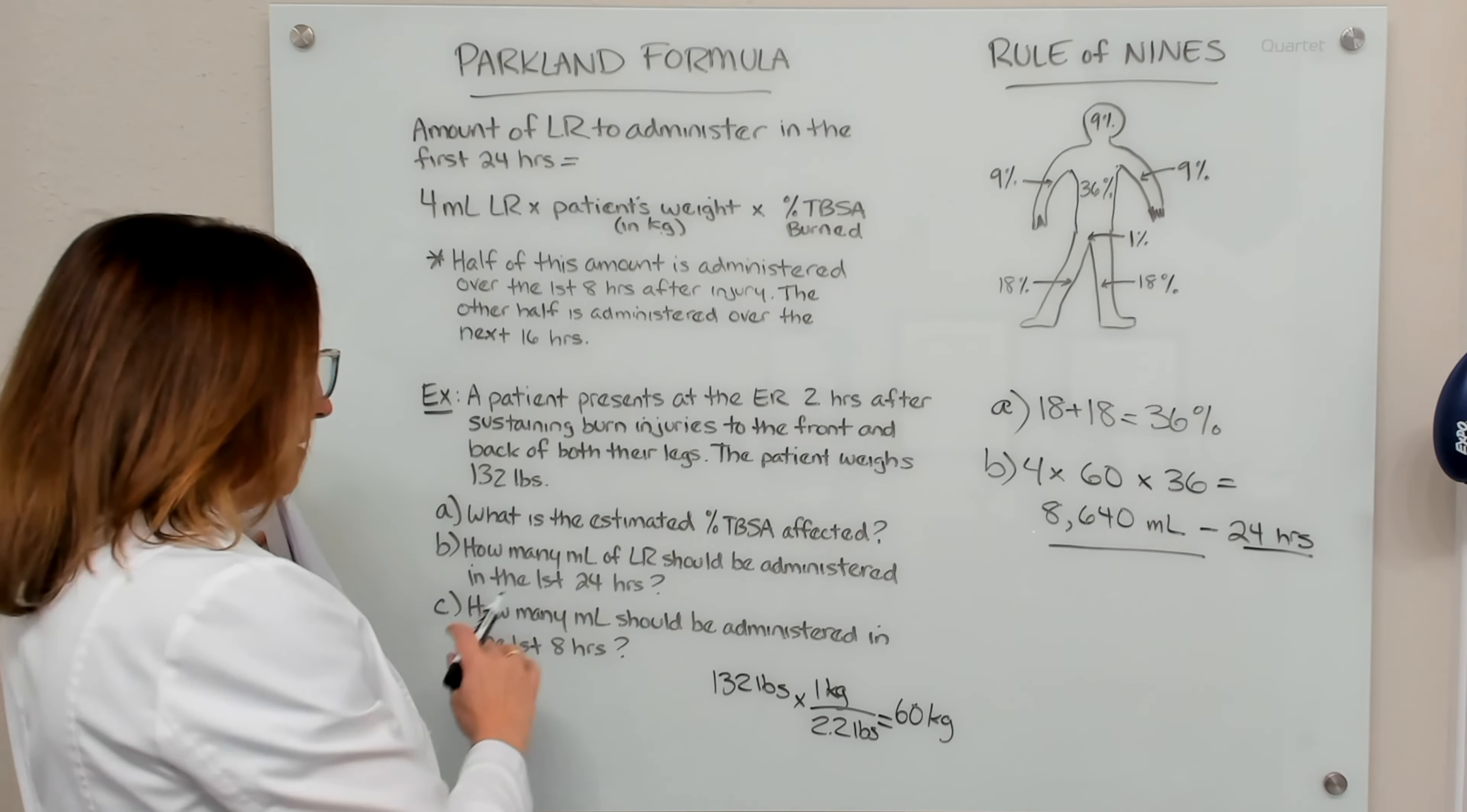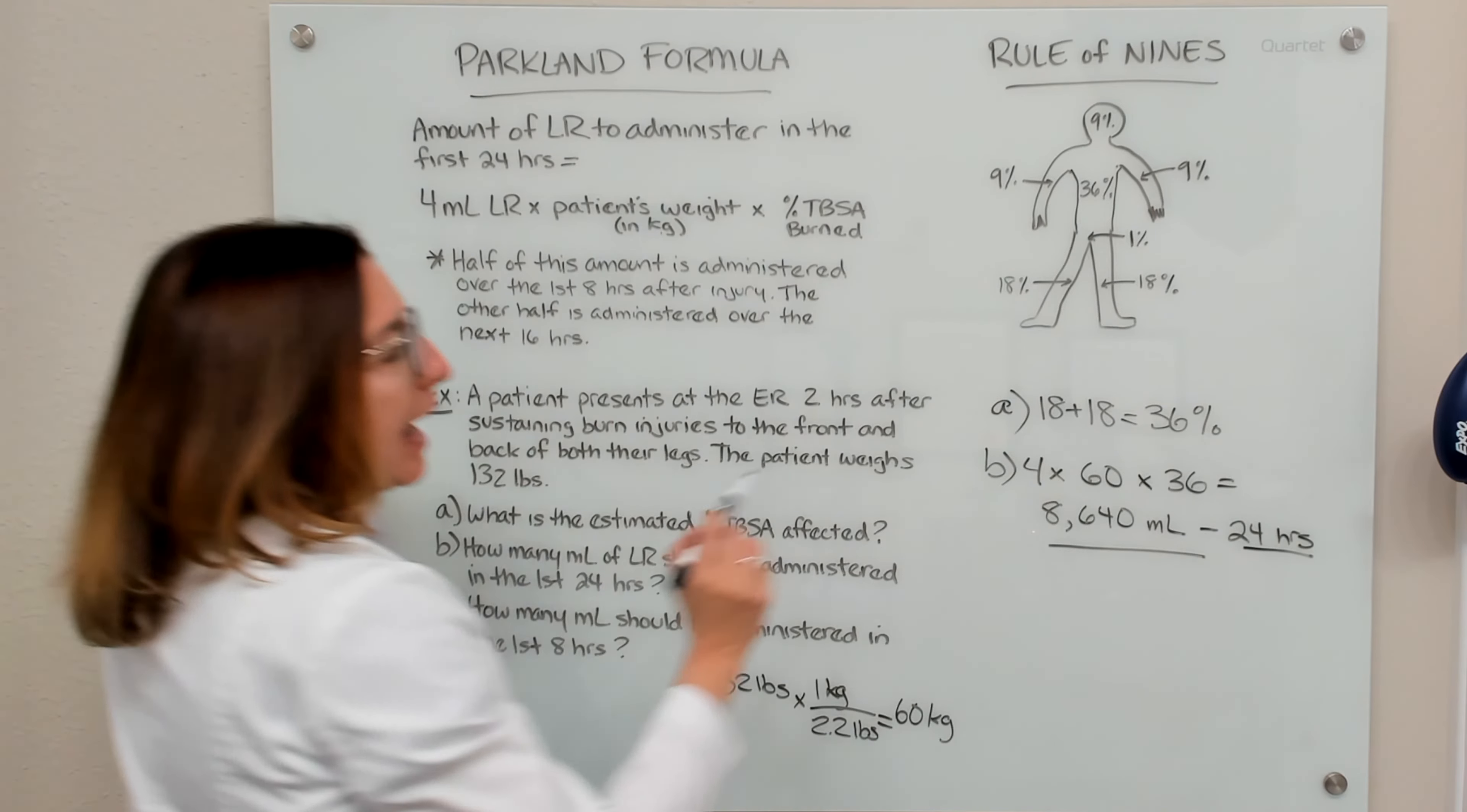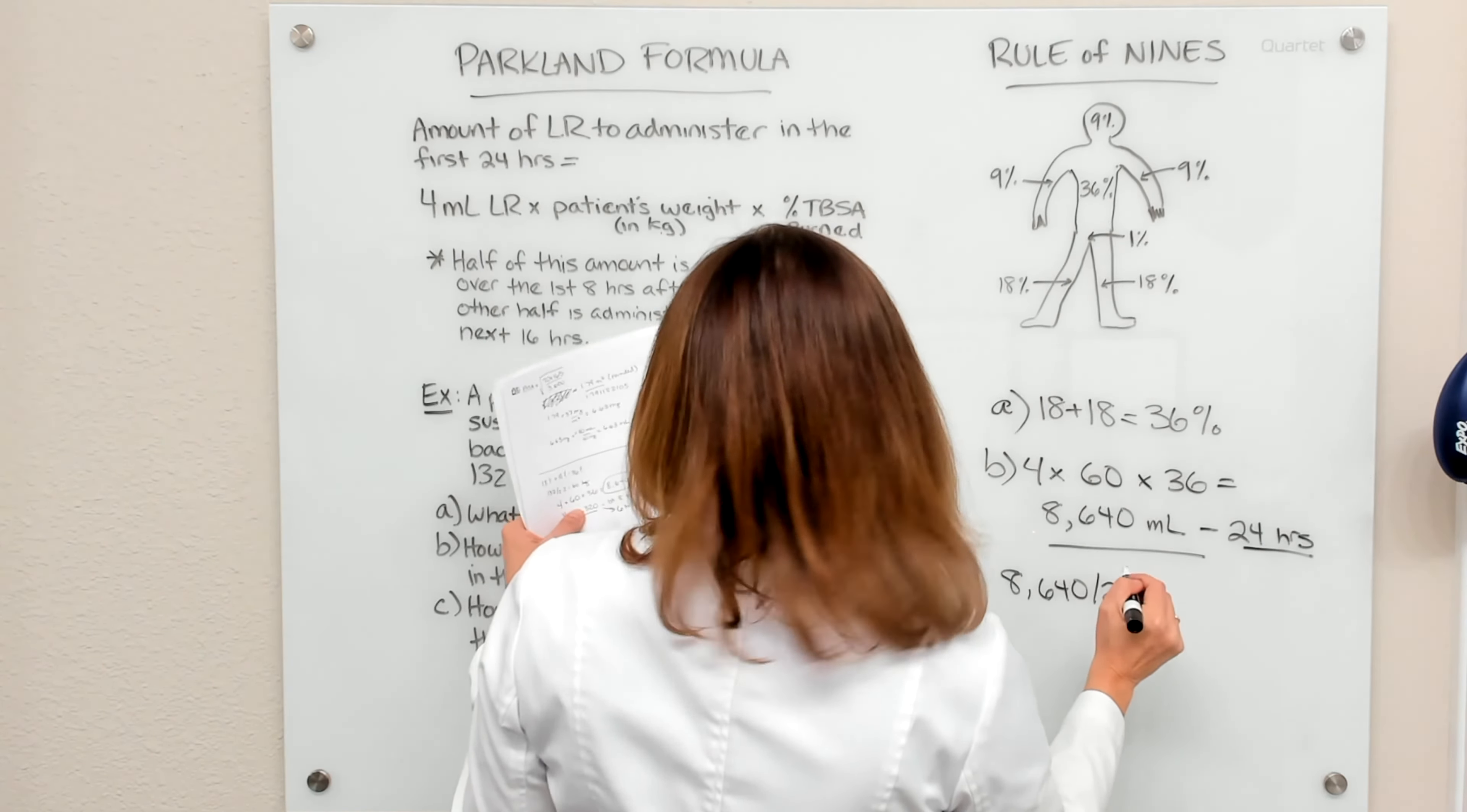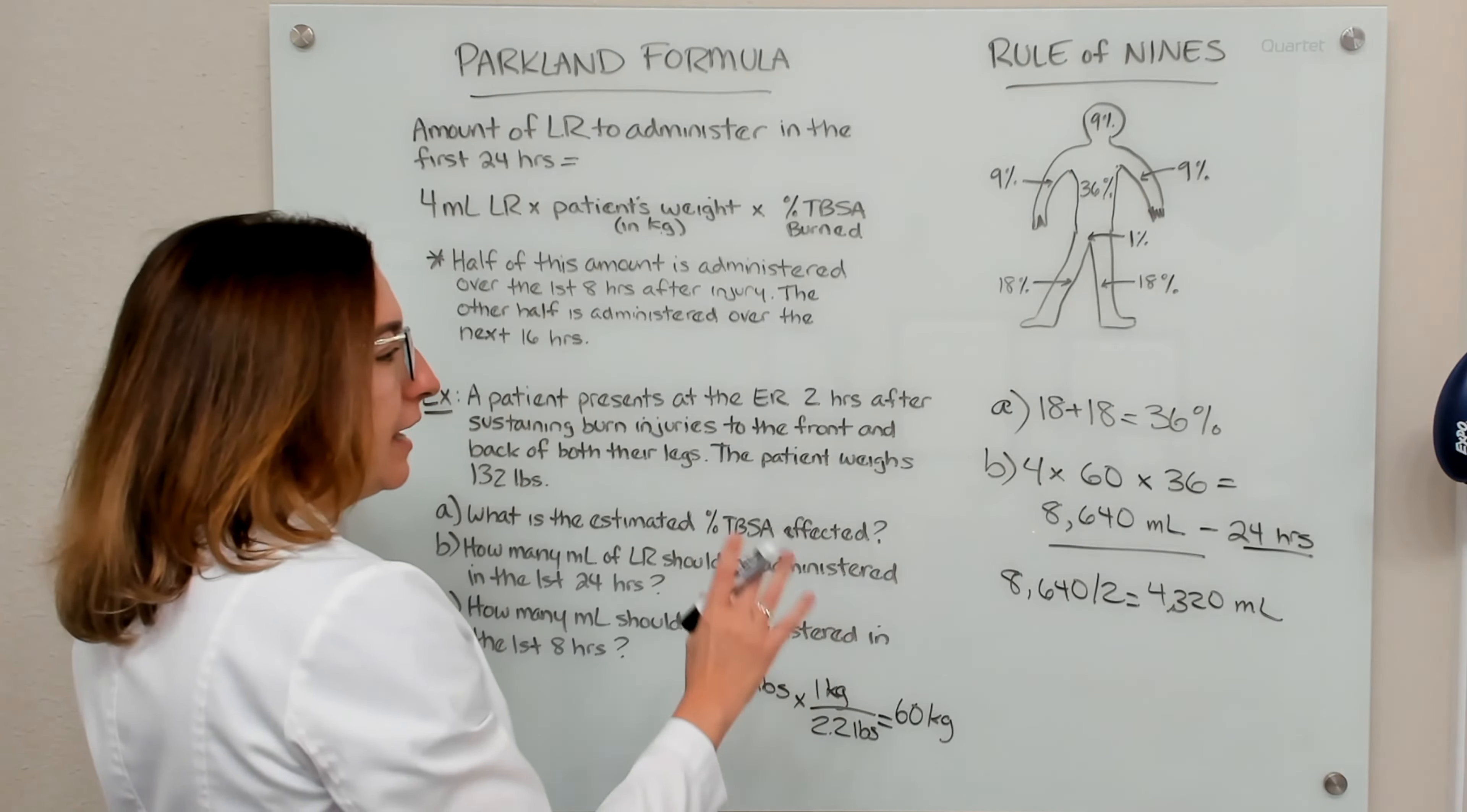Part C asks us how many milliliters should be administered in the first eight hours. And if you recall, when I explained this formula, half of this amount needs to be administered in the first eight hours. So if you take 8,640 divided by 2,